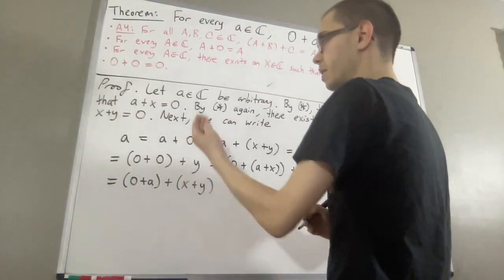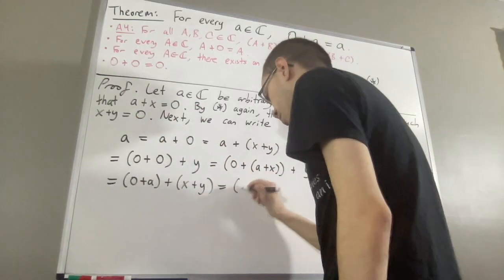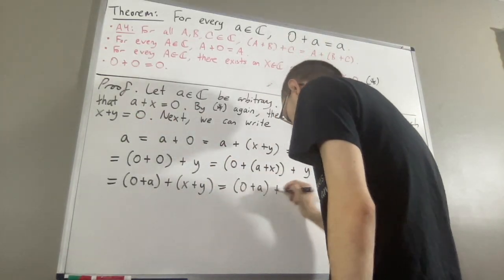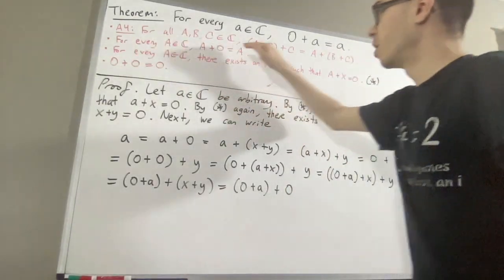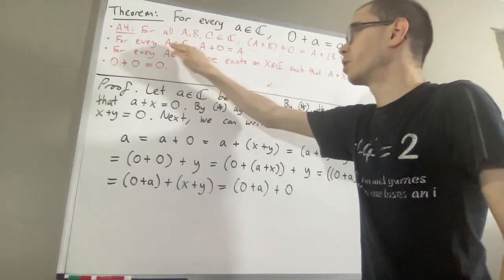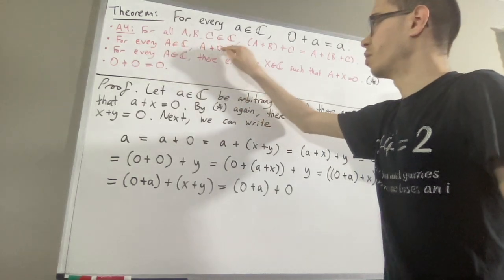We know that x plus y is equal to 0. So this is just 0 plus a plus 0. But then, we can apply our second result. Because remember, for every complex number a, a plus 0 is equal to a.